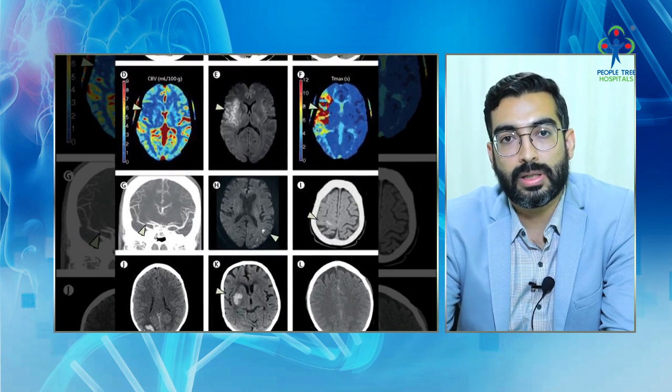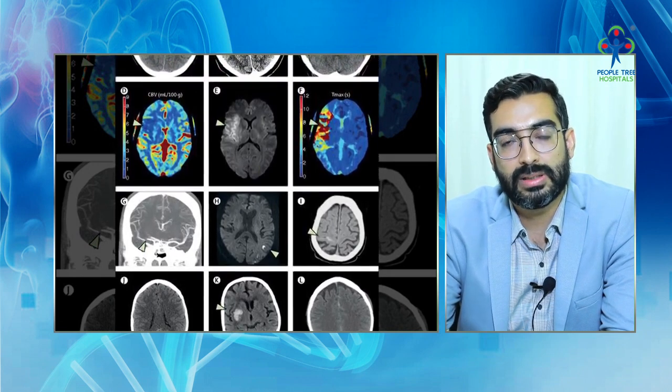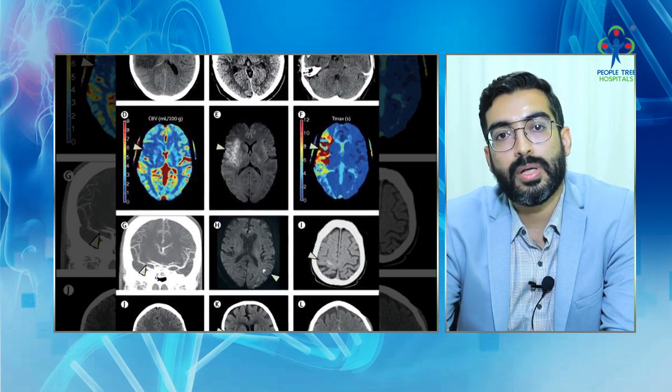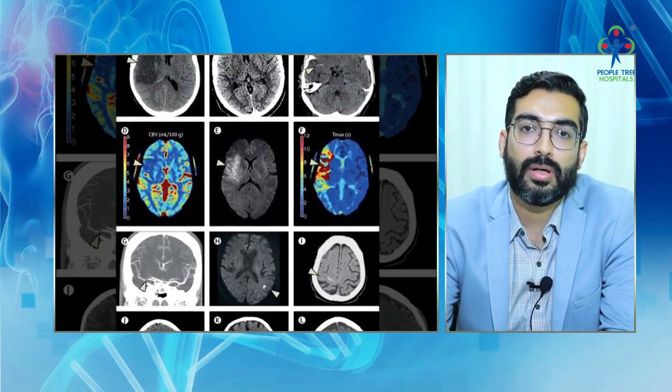Mechanical thrombectomy can normally be done within 6 hours, and in rare instances within 24 hours of stroke onset. Whenever a patient shows the symptoms described, they should rush immediately to the hospital — specifically to a stroke-ready hospital like Peopletree Hospital.